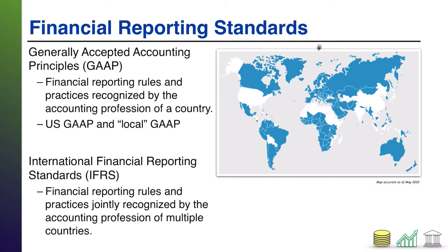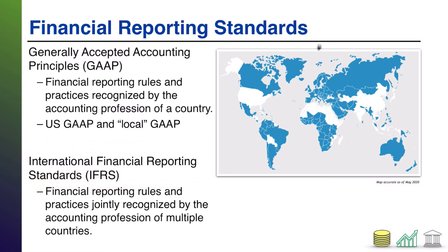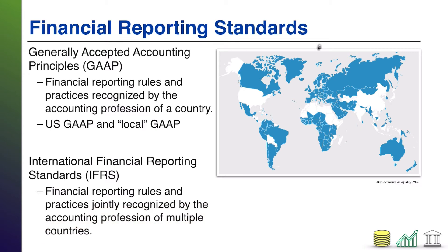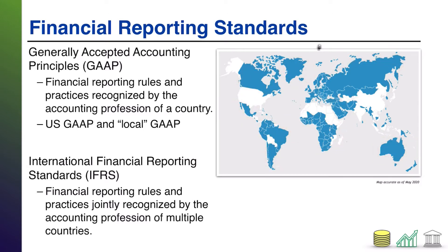Another one you're likely to hear about is IFRS, or International Financial Reporting Standards. This is a common set of rules and practices jointly recognized by the accounting profession of multiple countries. This map on the right — as of May 2020 — shows all the countries in blue that are following IFRS, meaning they are all aligned on the same set of accounting practices.